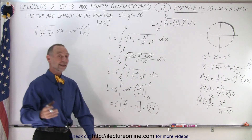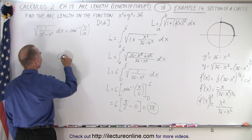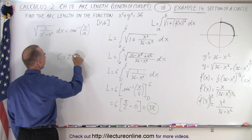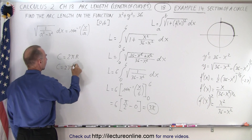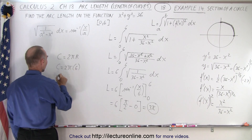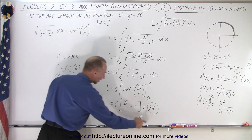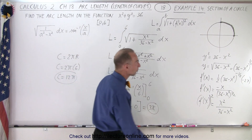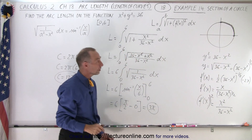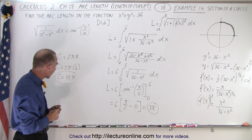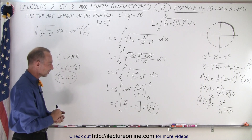Is that the correct answer? Well, the circumference of a circle is 2 pi r. In this case, C equals 2 pi times 6, so C equals 12 pi. Notice that 12 pi is 4 times 3 pi. Since we're looking for one quarter of the circle's circumference, 3 pi is indeed one quarter of 12 pi — so we have the right result.